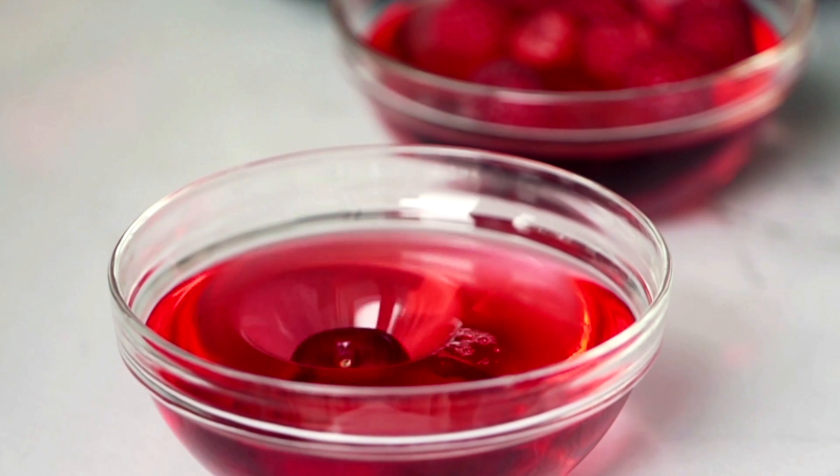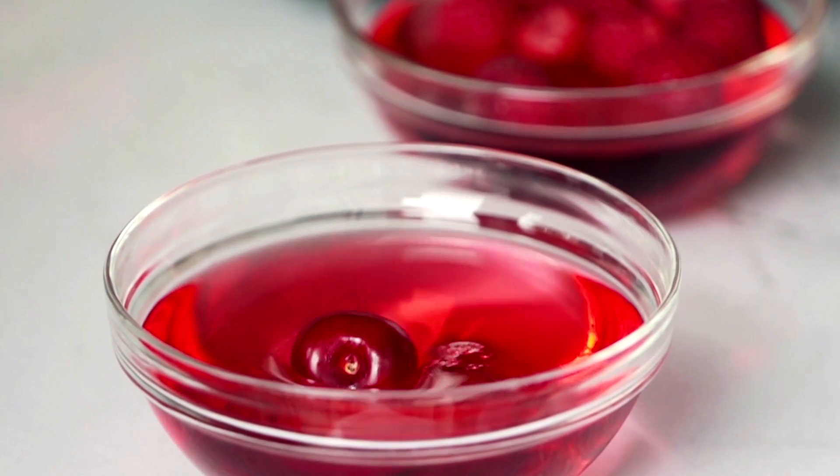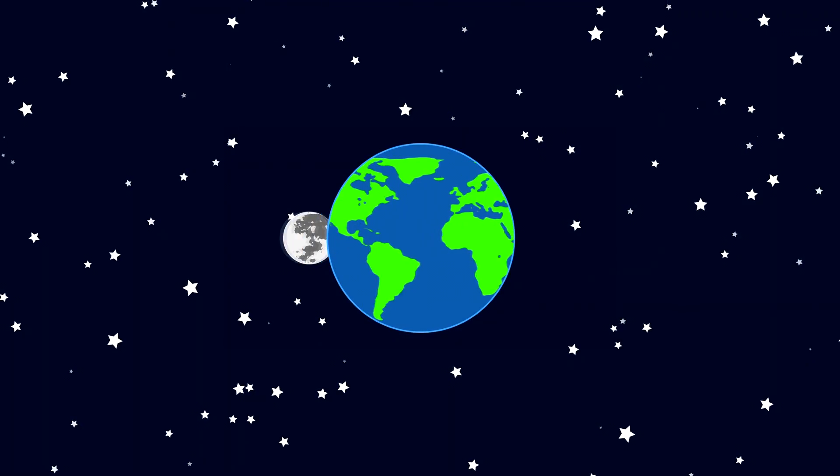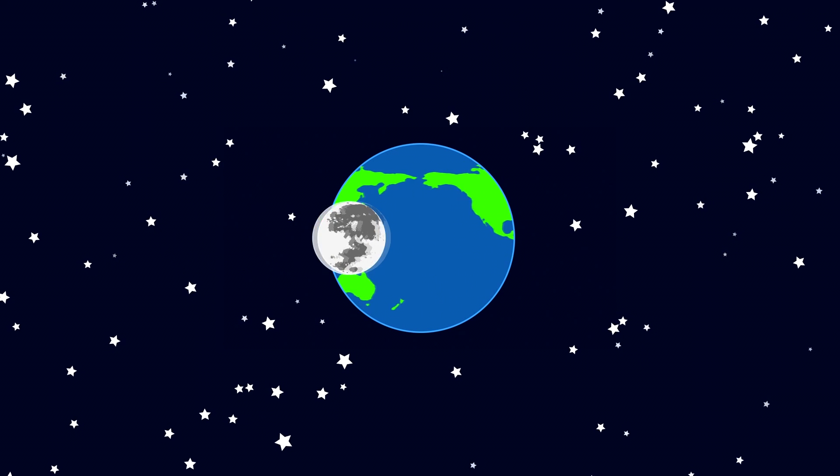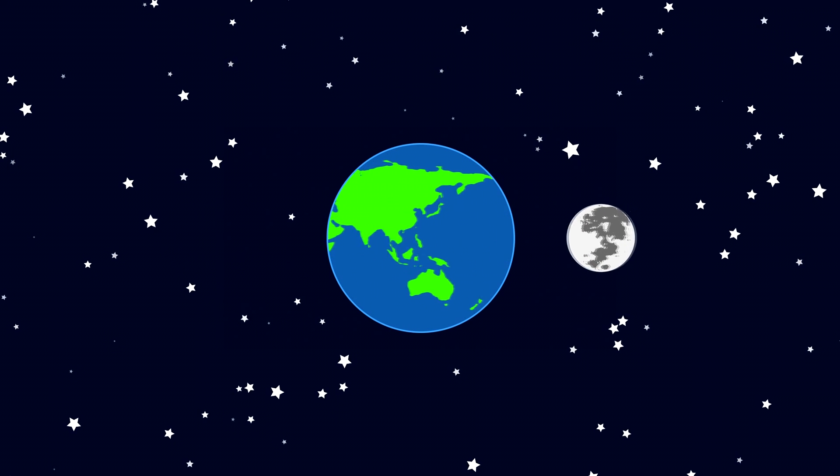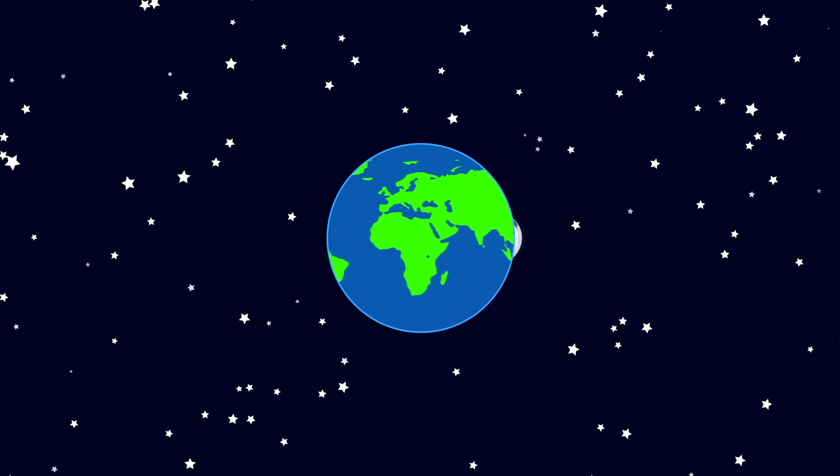To make it even simpler, let's say the universe is a dessert made out of jello and pieces of fruit. Our planet, the stars, and everything we can see are like the pieces of fruit. Dark matter is like the jello holding us all together. It's invisible, yet necessary.